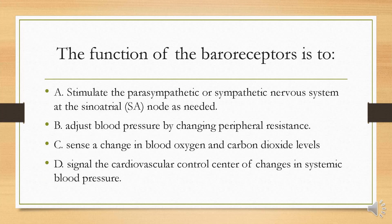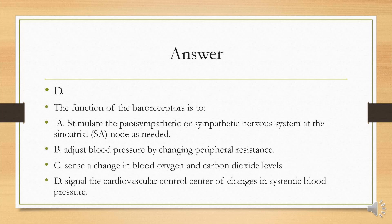The function of the baroreceptors is to: A, stimulate the parasympathetic or sympathetic nervous system at the sinoatrial node as needed; B, adjust blood pressure by changing peripheral resistance; C, sense a change in blood oxygen and carbon dioxide levels; or D, signal the cardiovascular control center of changes in systemic blood pressure. Your answer is D. Baroreceptors are present in the arch of the aorta and carotid sinus — they sense changes in blood pressure.